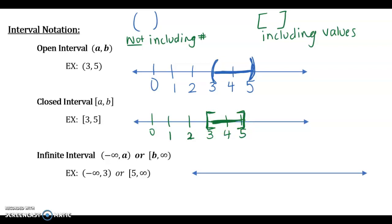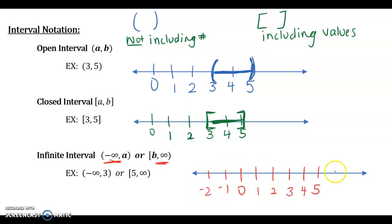The last interval type is the infinite interval. What makes it infinite is that these intervals have positive or negative infinity inside of them. For example, negative infinity to 3, or 5 to infinity — this is like graphing inequalities with arrows going in two directions. On my number line going from some negatives to above 5: for negative infinity to 3, I'm not including 3 and my arrow goes left; for 5 to infinity, I put a square bracket on 5 and go right above it.